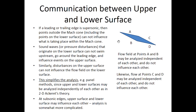With a supersonic leading edge, the lower surface cannot communicate with the upper surface because that would require sound waves to travel against the supersonic flow and go around the leading edge. Supersonic panel methods therefore limit the influence of a vortex panel on the lower side only to the Mach cone immediately behind it — lower and upper surfaces do not influence each other with a supersonic leading edge.